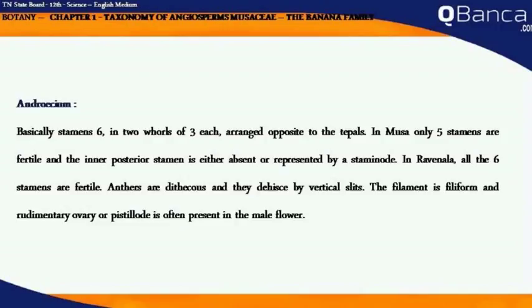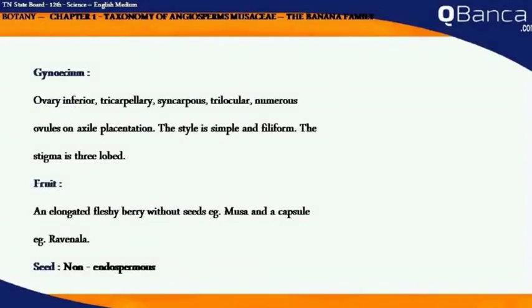Anthers are dithecous and they dehisce by vertical slits. The filament is filiform, and a rudimentary ovary or pistillode is often present in the male flower. Gynoecium: Ovary inferior, tricarpellary, syncarpous, trilocular, with numerous ovules on axile placentation. The style is simple and filiform. The stigma is three-lobed.